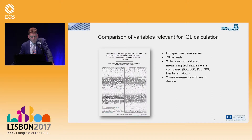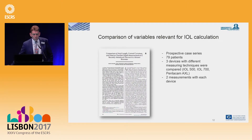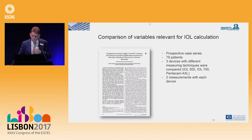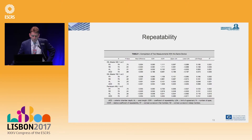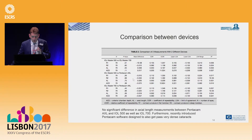Comparing variables relevant to IOL calculations: a paper published in AJO compared axial lengths, corneal curvature, and anterior chamber depth measurements from two recently introduced devices against a known biometer — the IOL Master 500, 700, and the Pentacam AXL. In this prospective case series of 79 eyes with power calculation prior to the study, we found a very good correlation between the IOL Master 500, 700, and AXL for all parameters.